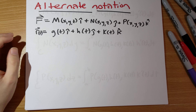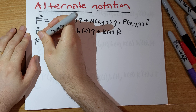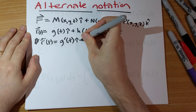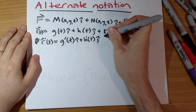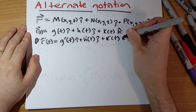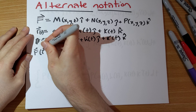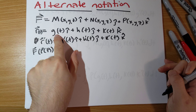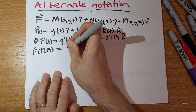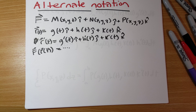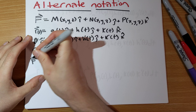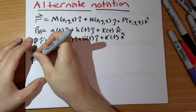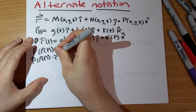We know how we compute these: we do the integral of f(r(t)) dot dr/dt. So r prime of t would just be g'(t) i-hat plus h'(t) j-hat plus k'(t) k-hat. And then f(r(t)) means we replace x, y, and z with g(t), h(t), and k(t) respectively. There's going to be a lot of writing so I'm not going to explicitly write everything down.